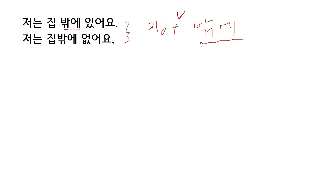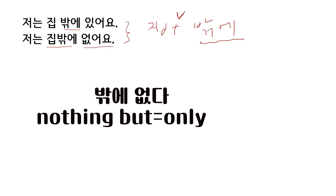I am outside my house. 집 밖에 — connected with 없어요 — 밖에 없어요. This 밖에 없어요 means 'only'. I have only a house. I have nothing but house.